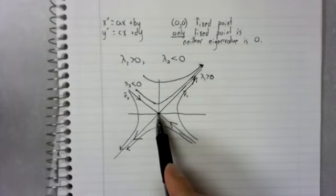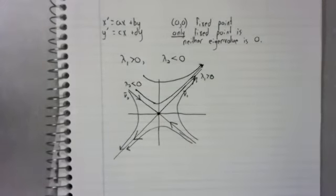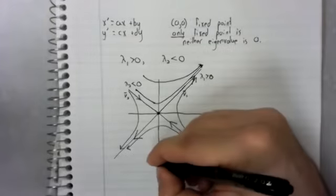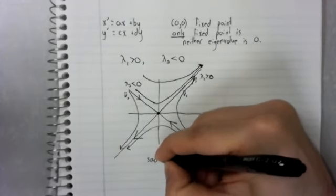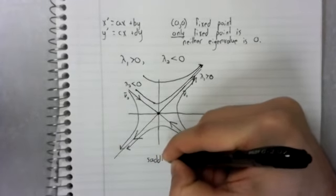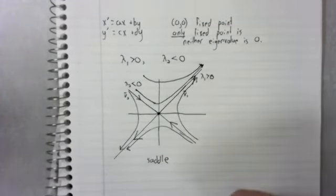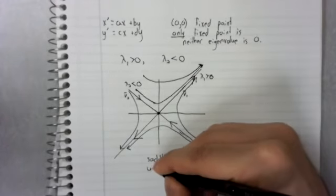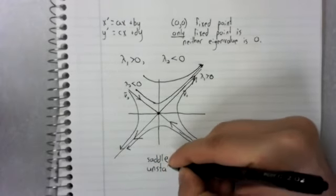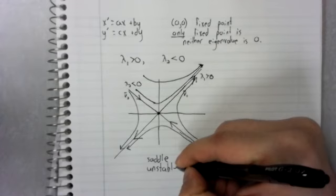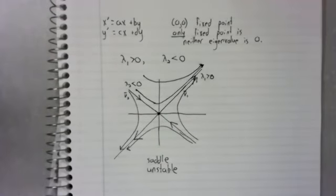This fixed point is called a saddle. And it is a type of unstable fixed point.